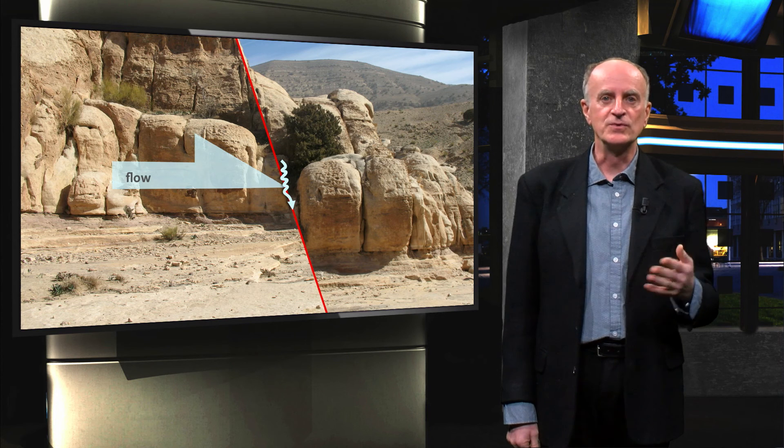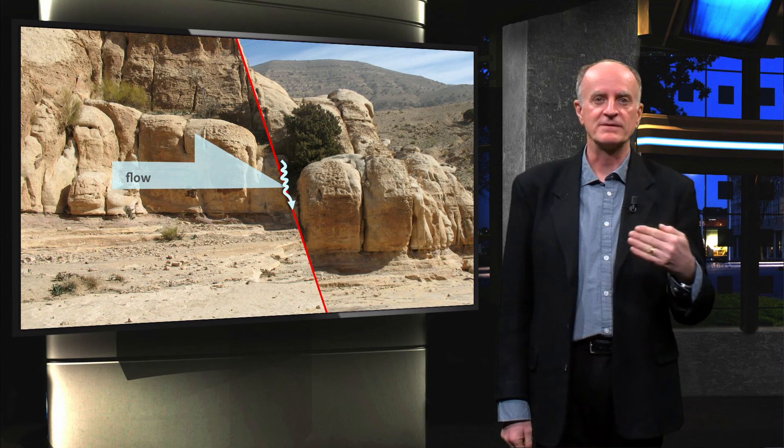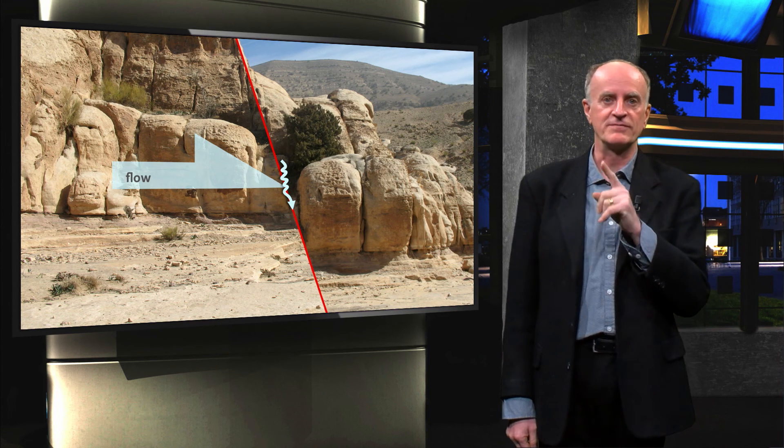They can impact the continuity of the sandstone body and also form barriers for layer parallel flow. However, if a fault is permeable, it can also form a pathway for flow.